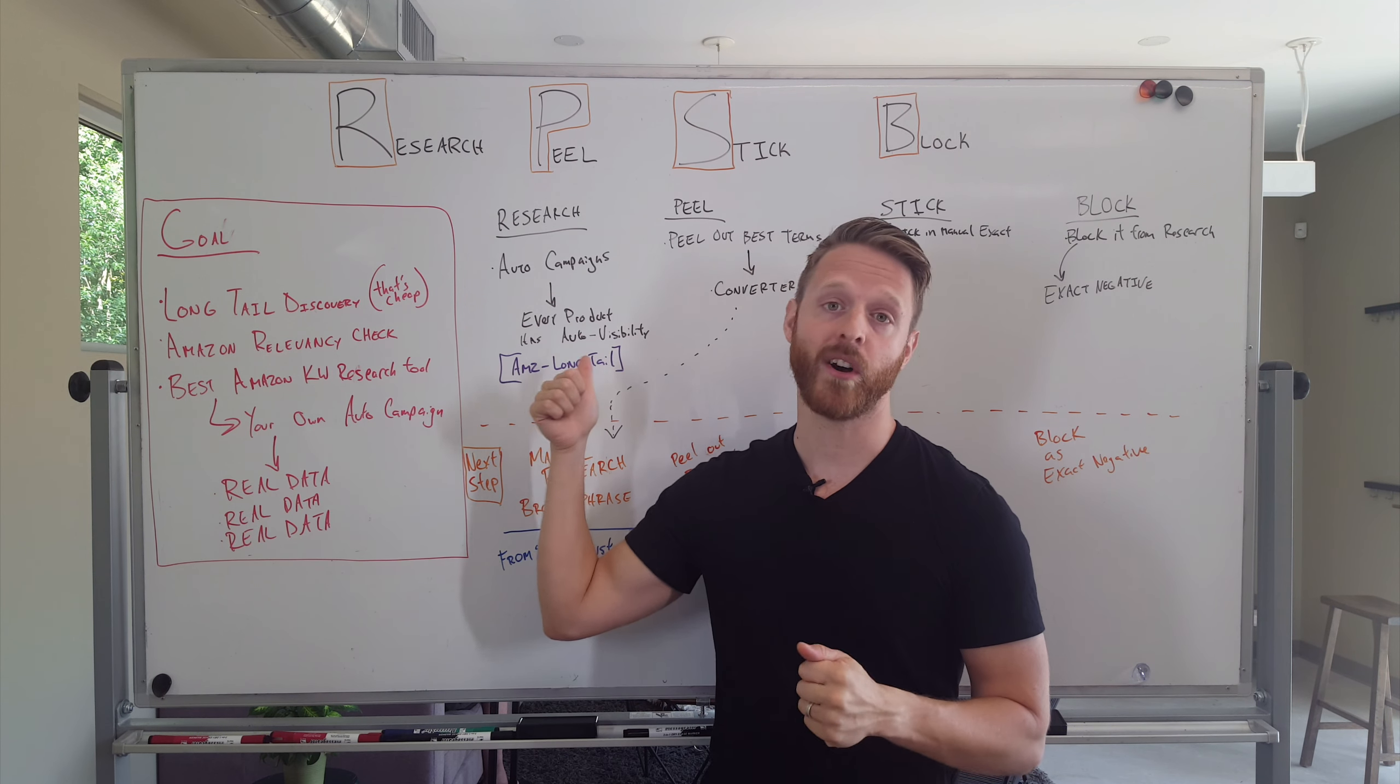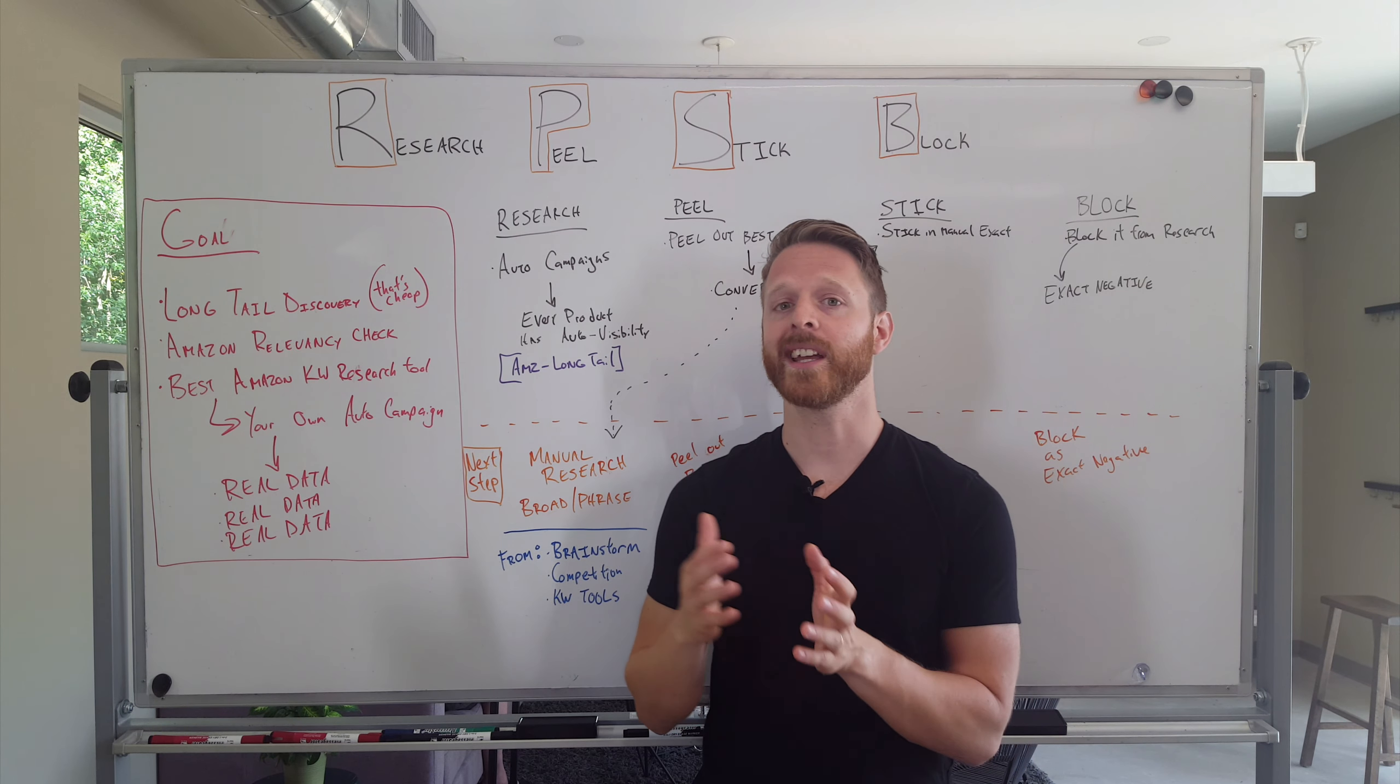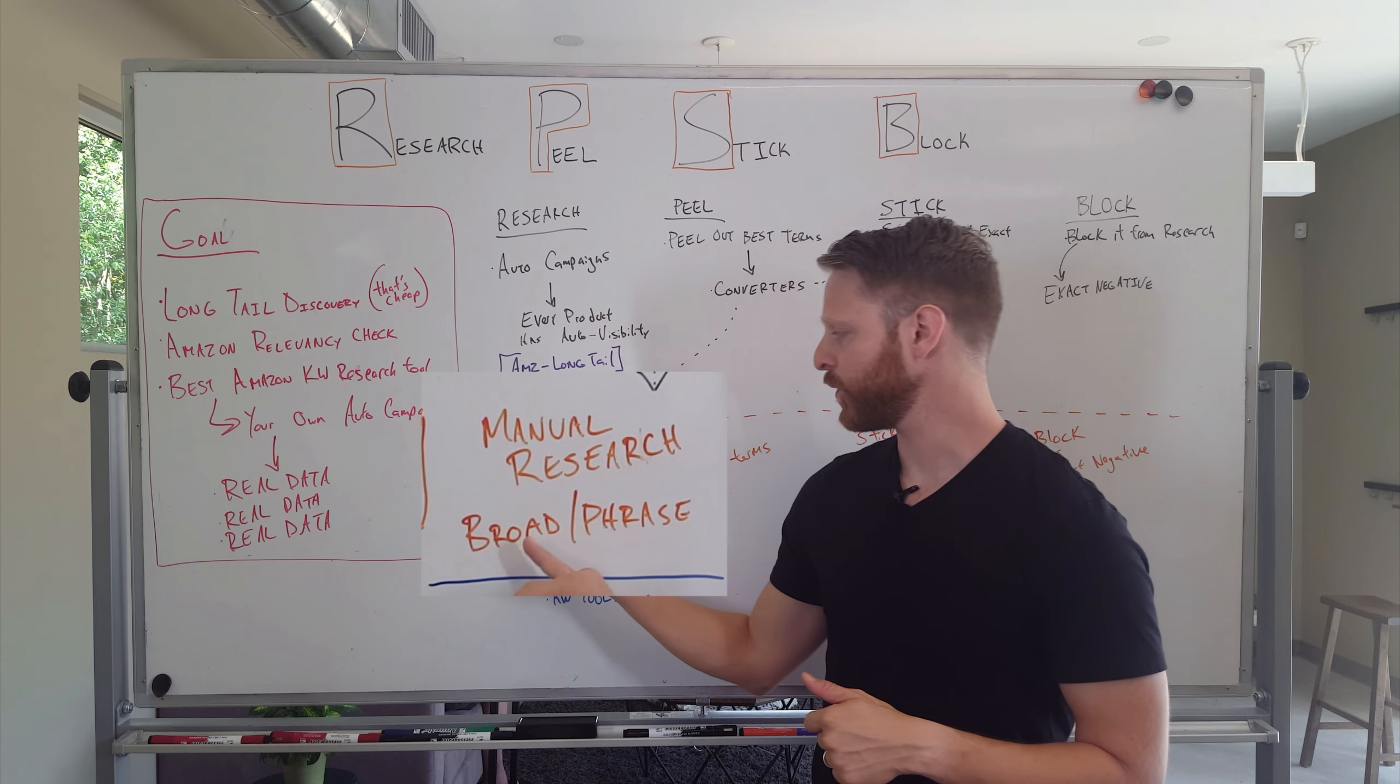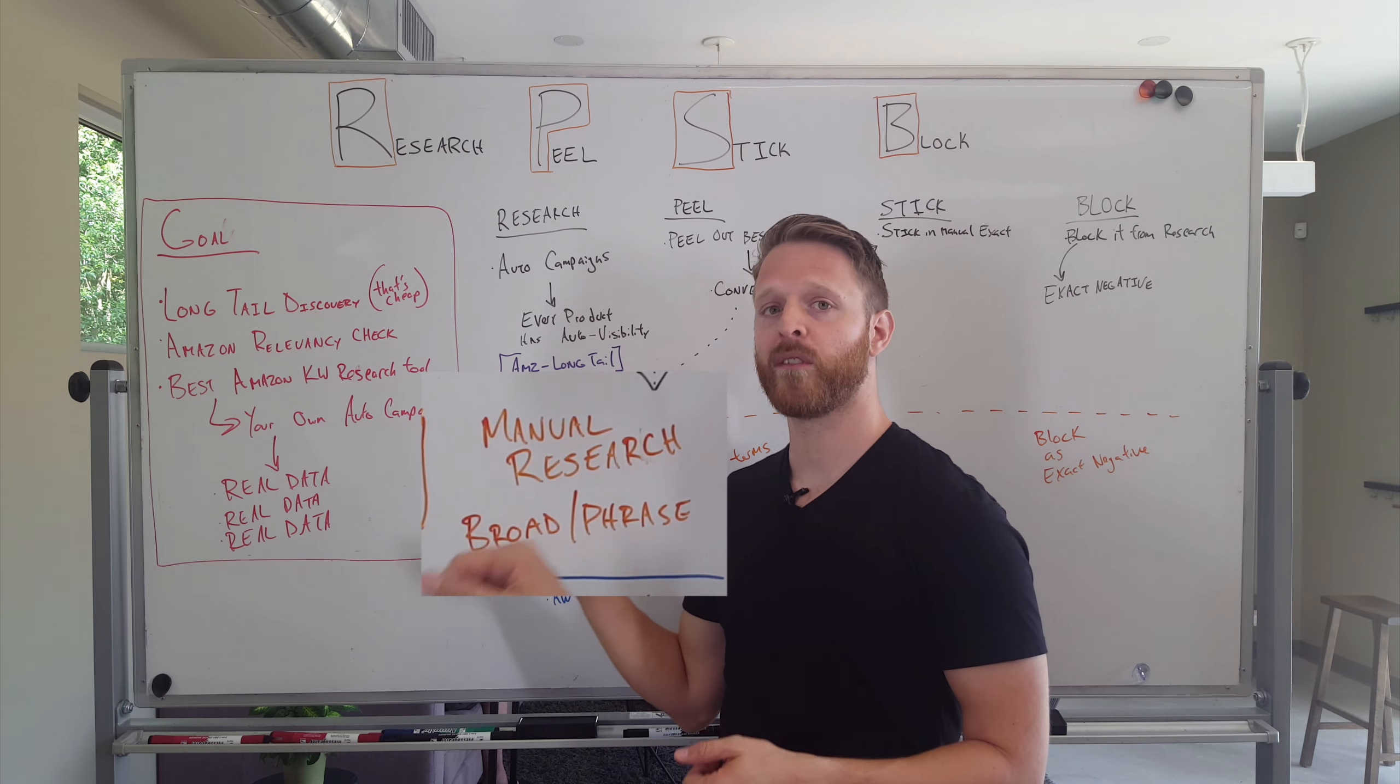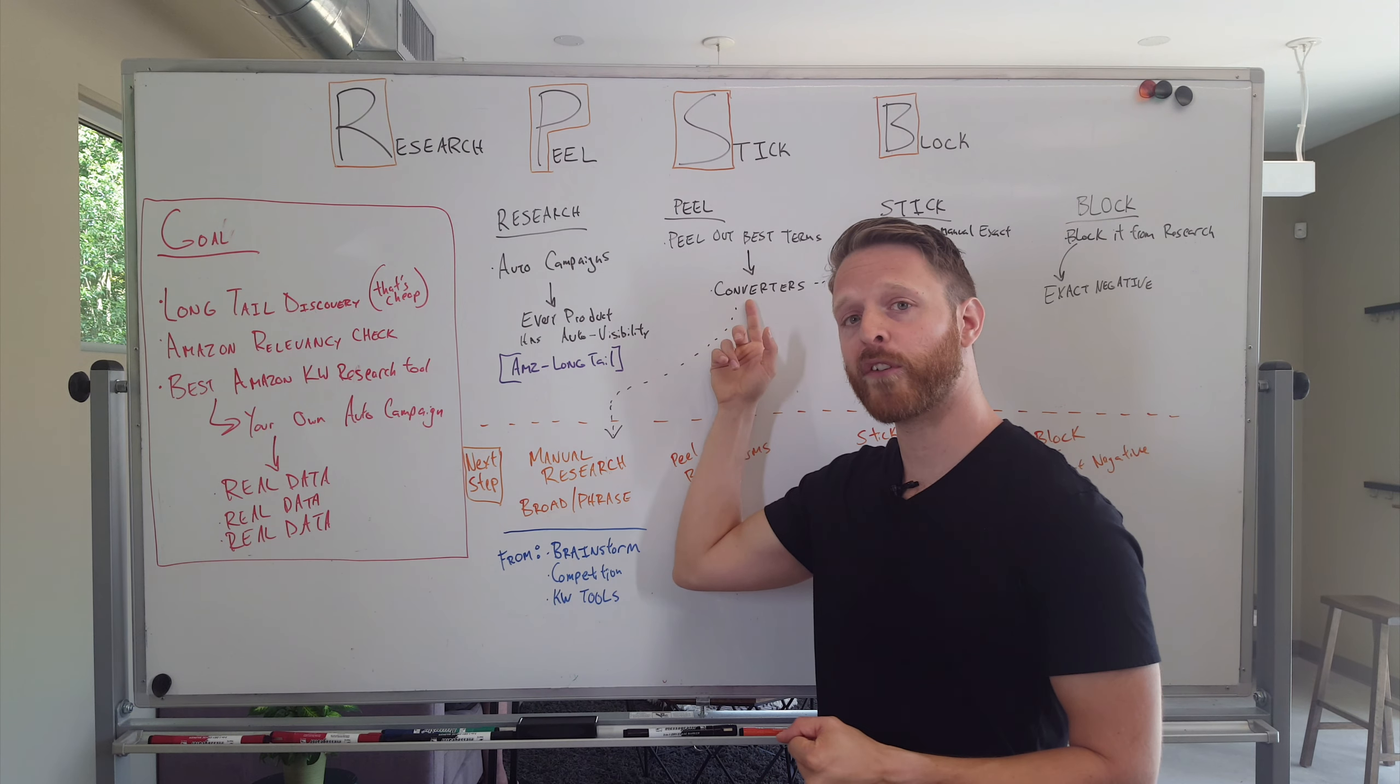For those who are a little bit more advanced and want to kick it up a notch, the next step would be this: to have a manual for research as well. This is where you enter your terms as broad and phrase. And a really good place to get terms for a broad and phrase is actually from here. So if it converts, you drop it into a winner's circle exact match, and you can also throw it back into a research.